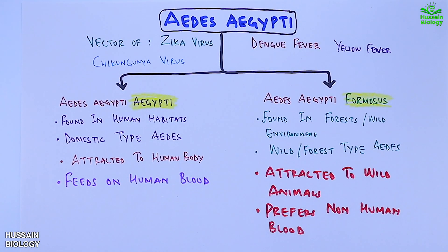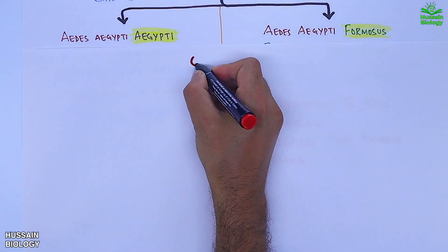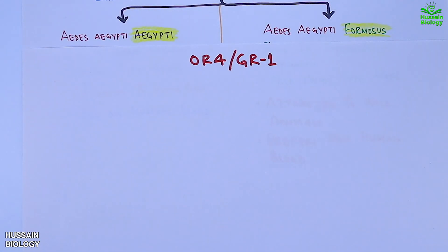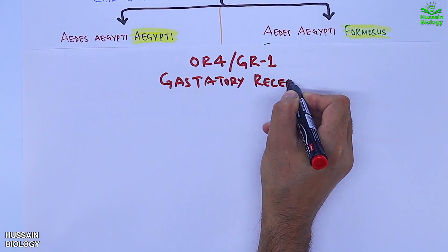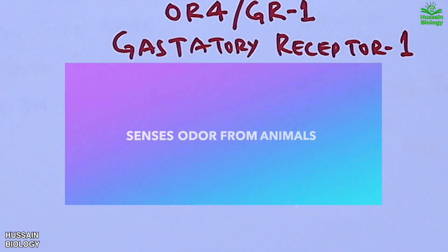The question is: how do these different subspecies have preferences in feeding? It is all due to OR4, also known as GR1 or the odorant receptor, present in mosquitoes that can sense different odors from the environment.